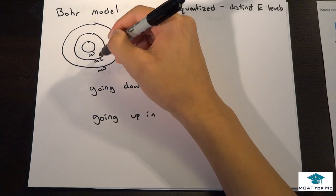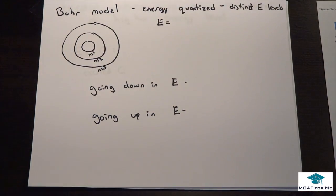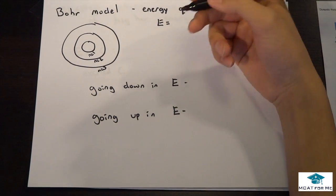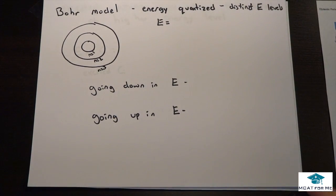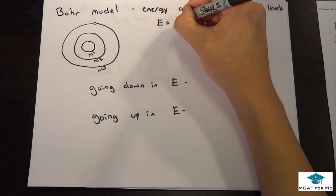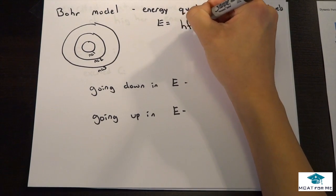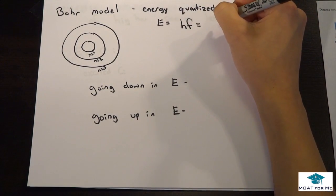To get from n=1 to n=2, we need a specific amount of energy to jump. If we have any more or any less, we will not get to that energy level that we desire. That's why energy is quantized. E = hf is an equation that is very important, not just in chemistry but in physics.